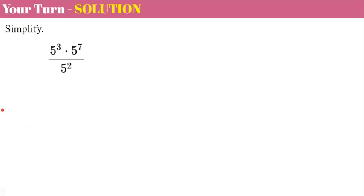Welcome back. So the first thing I'm going to do is simplify my numerator. There are multiple ways to evaluate this expression correctly, but that's what I'm going to do. So when we have the same base and we're multiplying, we're going to add our exponents. Three plus seven is ten.